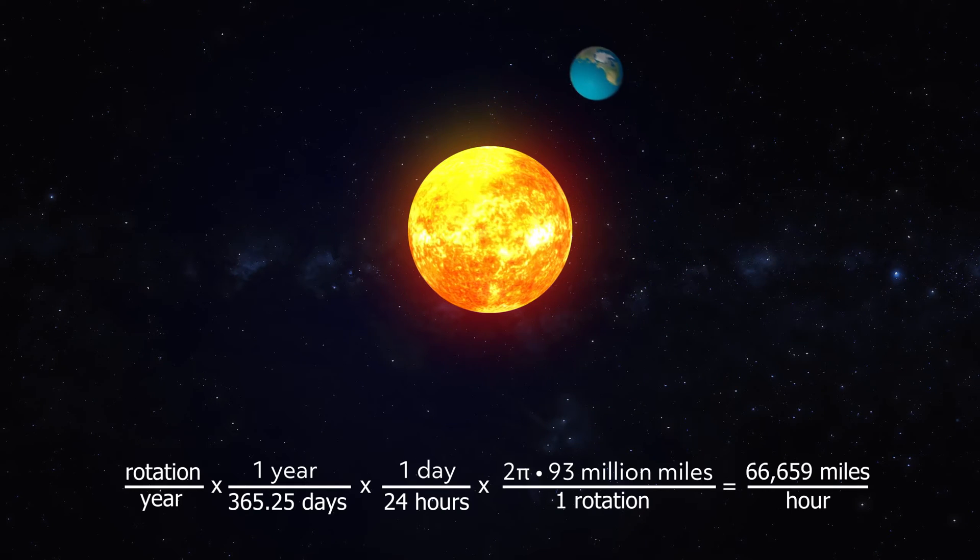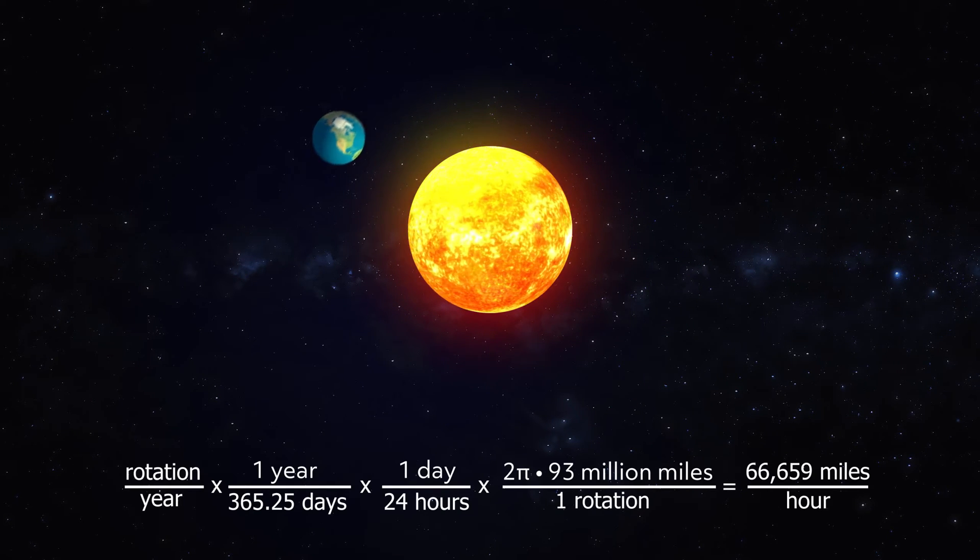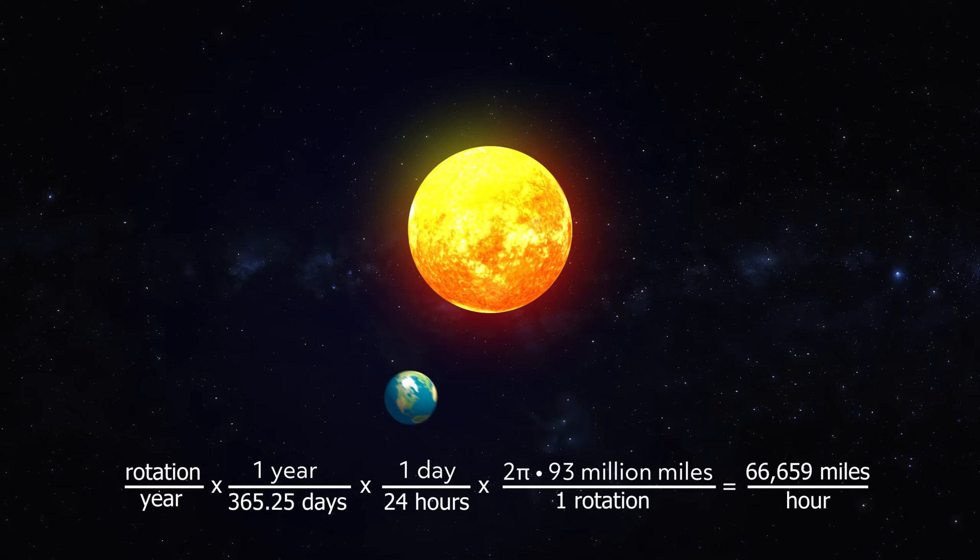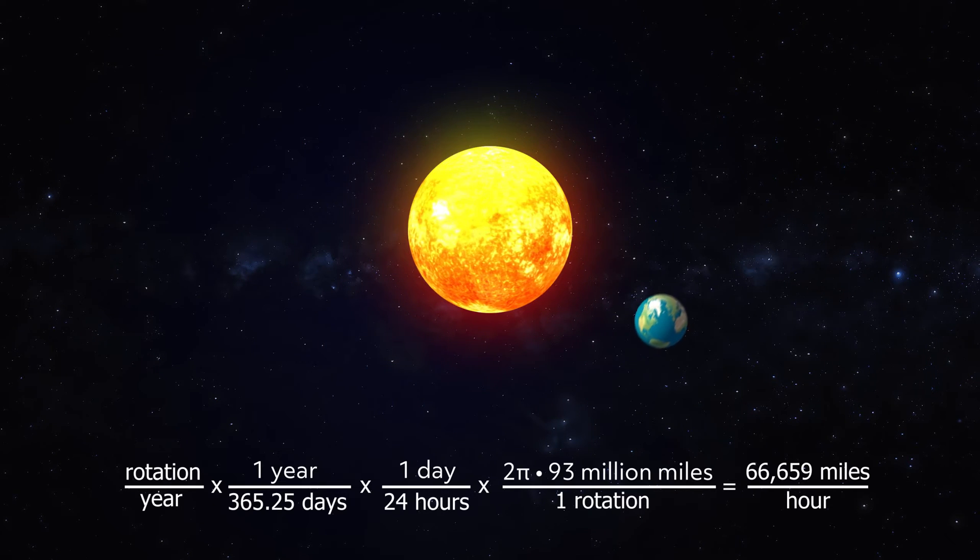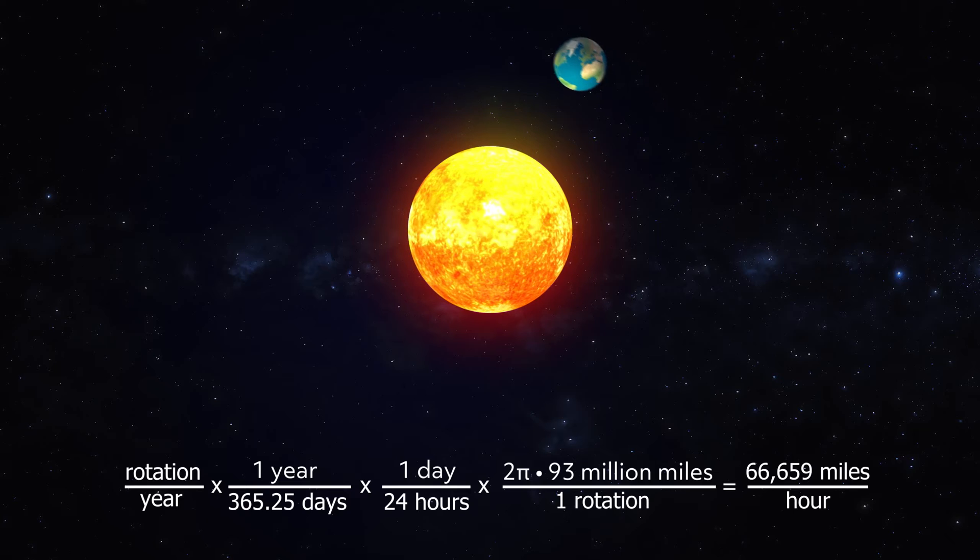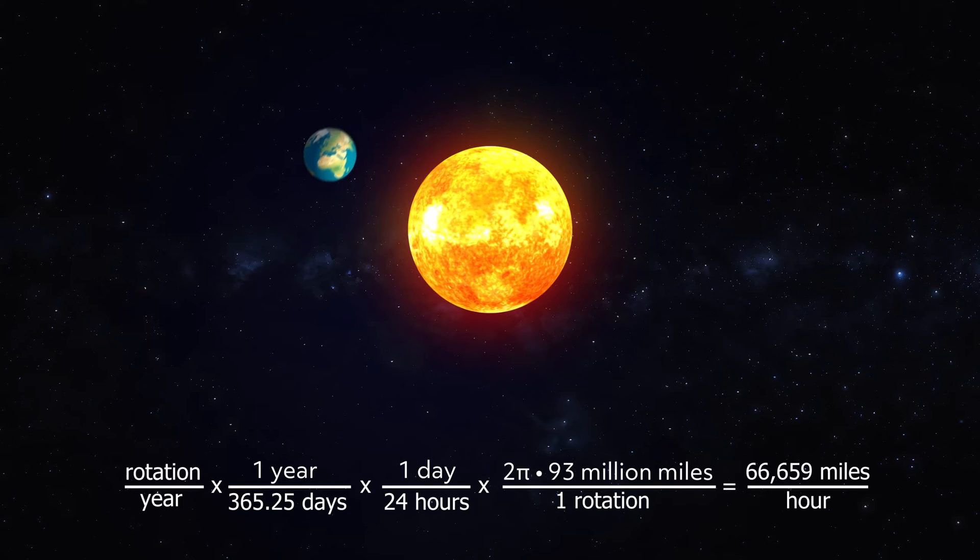Then, one rotation is 2 pi r, where r is 93 million miles. So, we see the Earth is zipping around at 66,000 miles per hour.